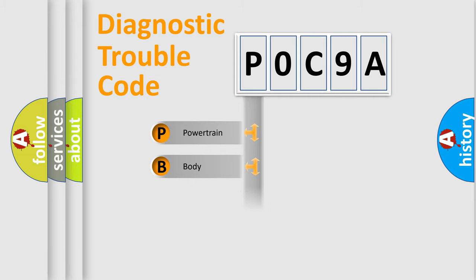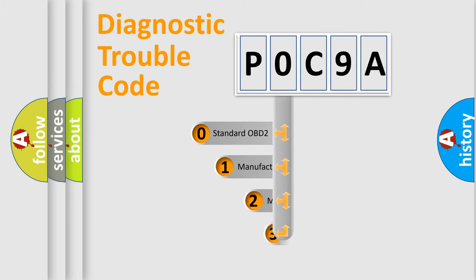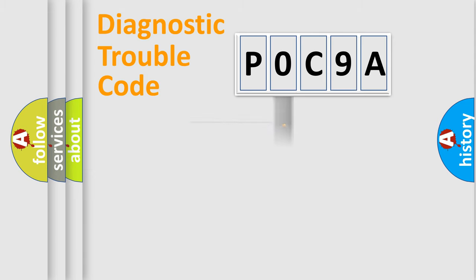Powertrain, Body, Chassis, Network. This distribution is defined in the first character code. If the second character is expressed as zero, it is a standardized error. In the case of numbers 1, 2, 3, it is a manufacturer-specific expression of the car specific error.